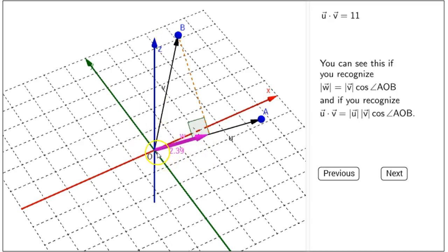And angle AOB is the angle between the two vectors. And so, the cosine of that angle is the length of W divided by the length of V. Solving for the length of W gives us that equation: the length of W equals the length of V times cosine of angle AOB.